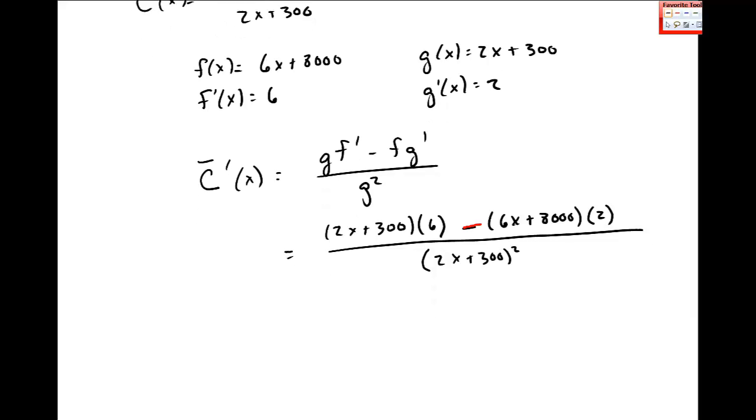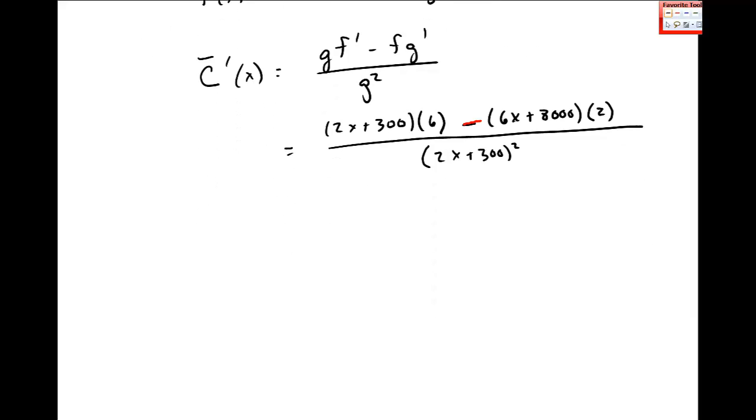So let's go ahead and simplify this numerator. Here I get 12x plus 1,800 minus, and then I have 12x plus 16,000.